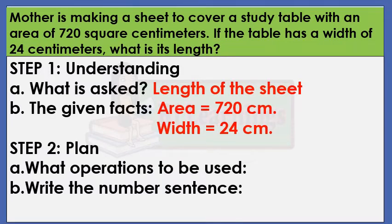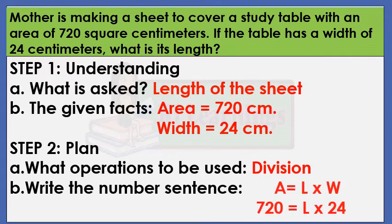Step 2: Plan. What operations to be used: Division. Write the number sentence: Area equals length times width. 720 equals length times 24.